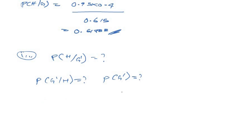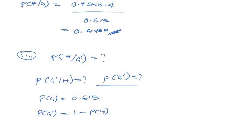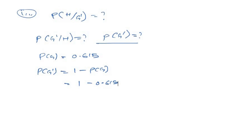Since P(G) = 0.615, we can find the probability of not getting a good review: P(G') = 1 − P(G) = 1 − 0.615 = 0.385. This is the probability of not attaining a good review.